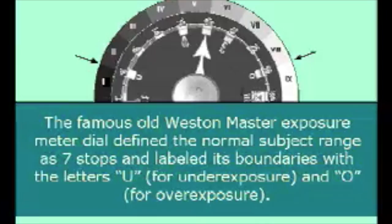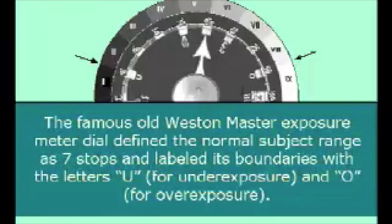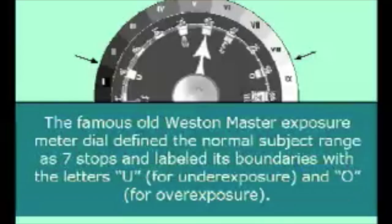The famous old Weston Master exposure meter dial defined the normal subject range as seven stops and labeled its boundaries with the letters U for underexposure and O for overexposure. It considered the middle of the range to be three stops down from the highlight boundary and four stops up from the deep shadow boundary. This middle gray value, indicated by the normal pointer, represents approximately 12% reflectance, not the 18% of the familiar gray card.